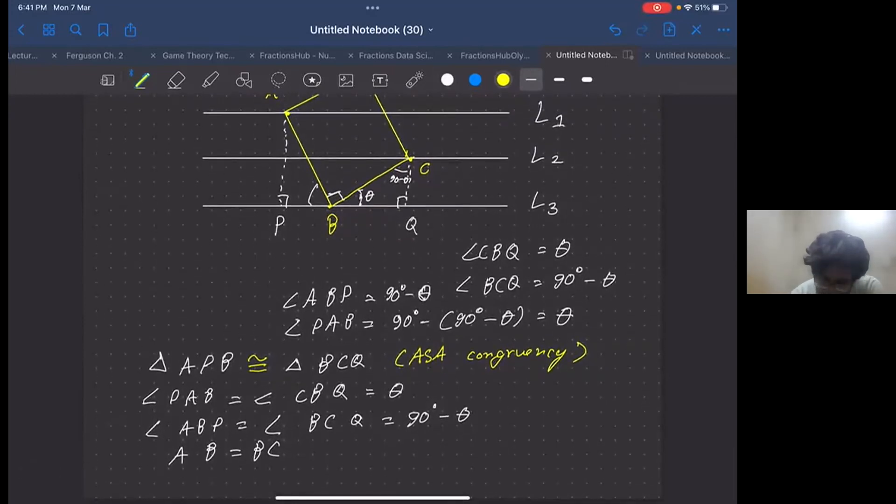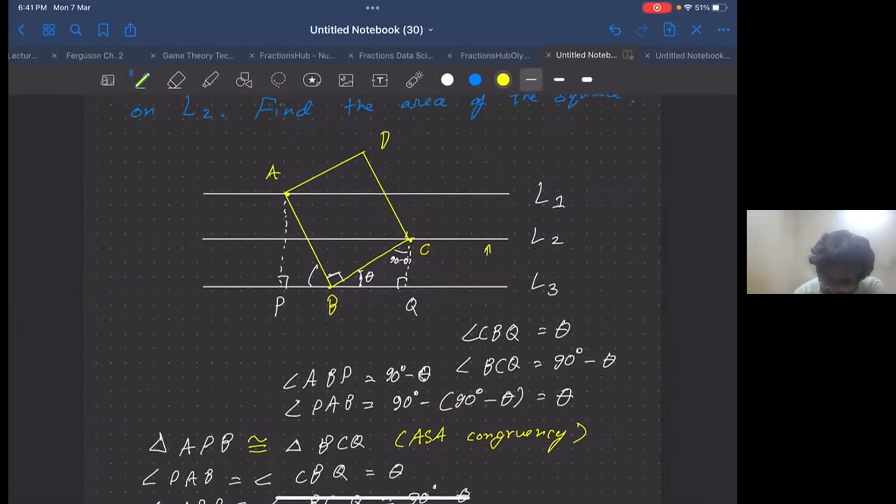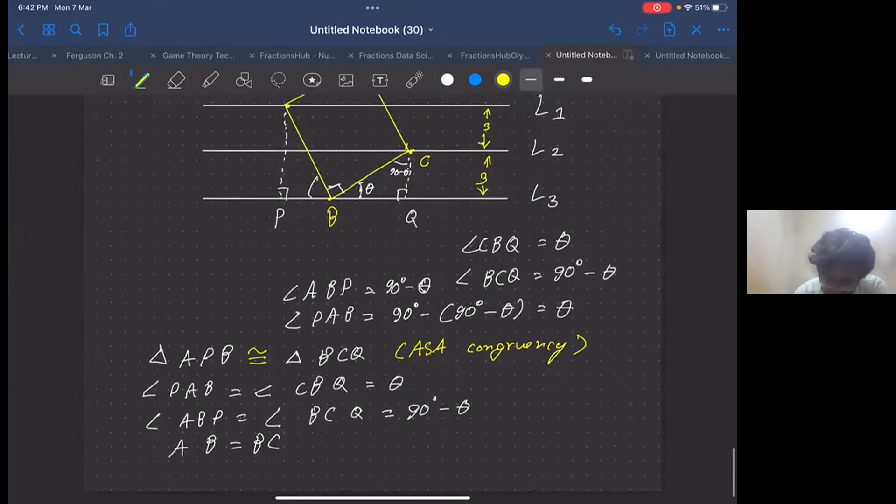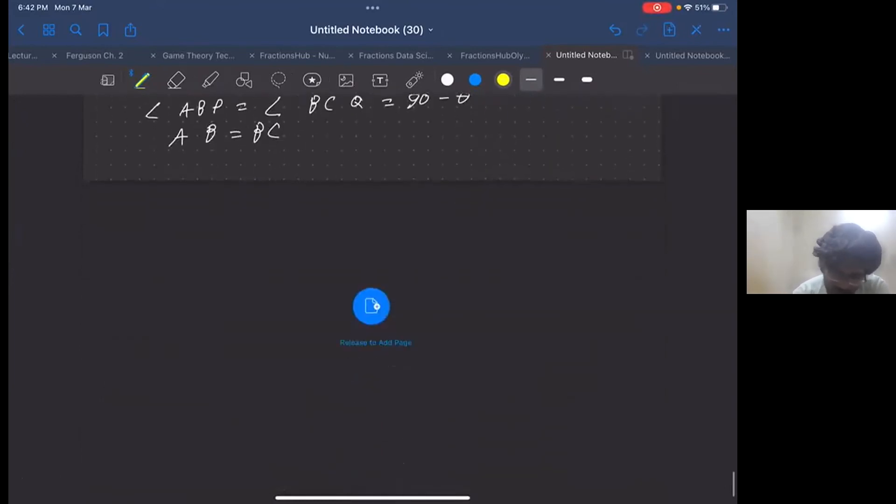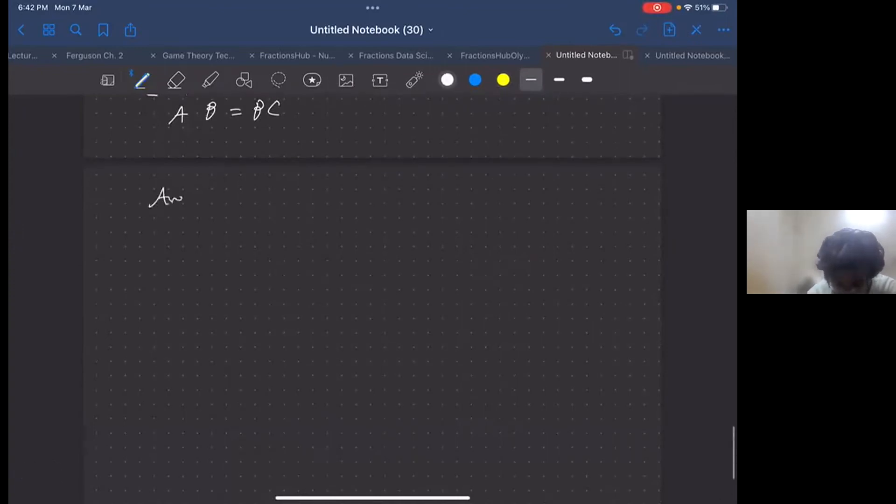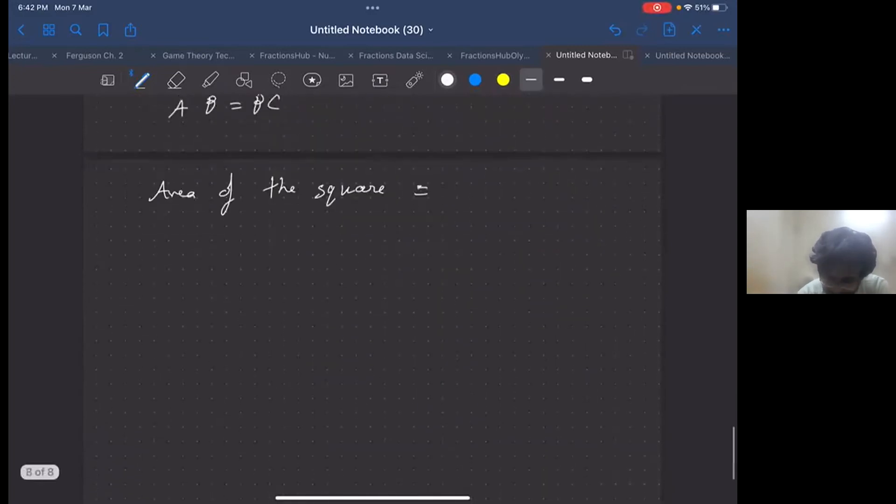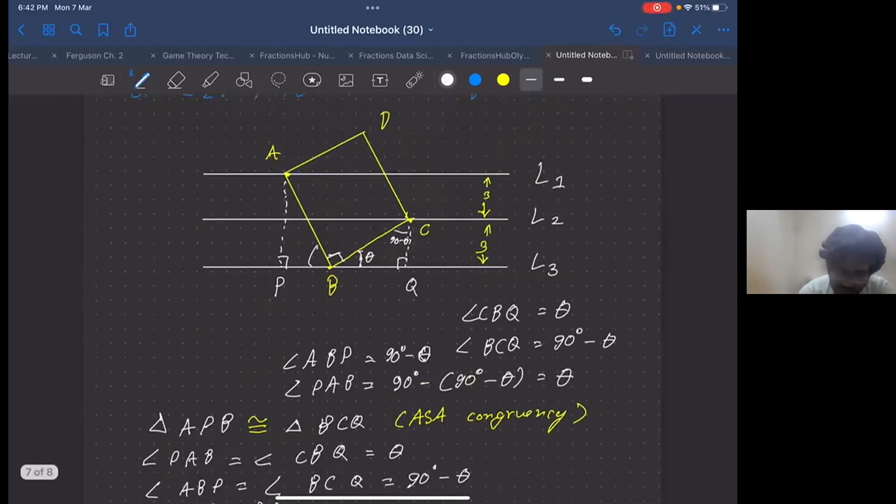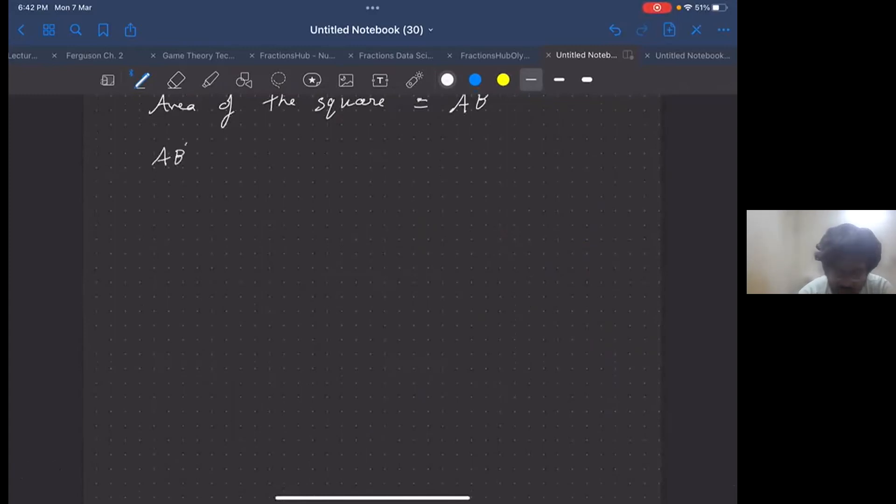It's given in the question that the distance between consecutive parallel lines is 3, and this is 3 as well. We have to find the area of the square. The area of the square is the square of any particular side, say AB. So we have to find AB squared. Now, APB is a right angle triangle, so AB squared by Pythagorean theorem is AP squared plus PB squared.